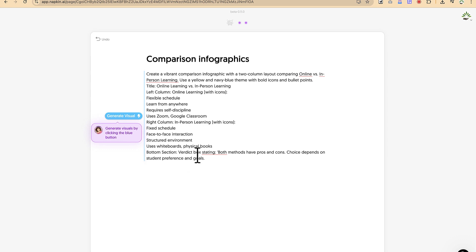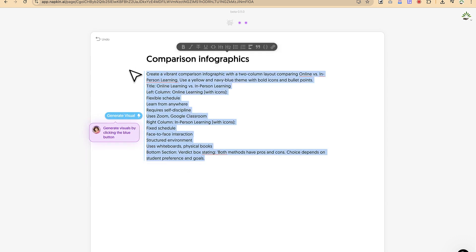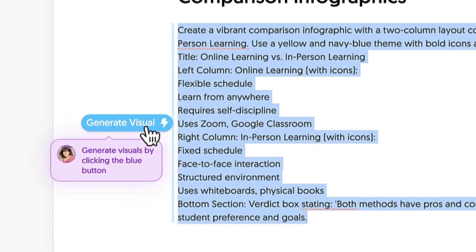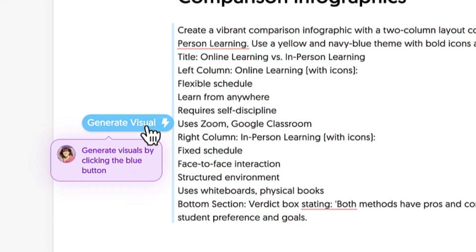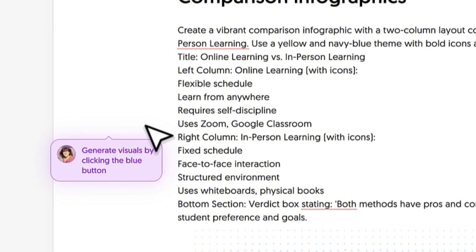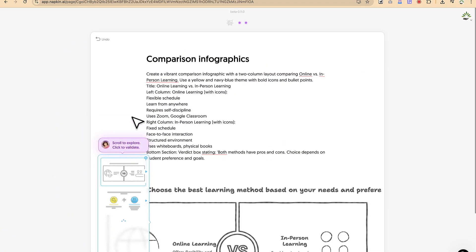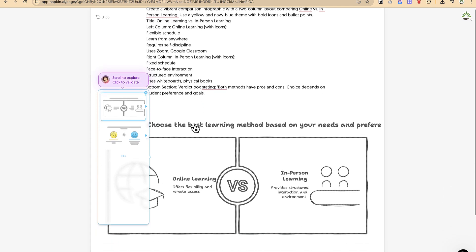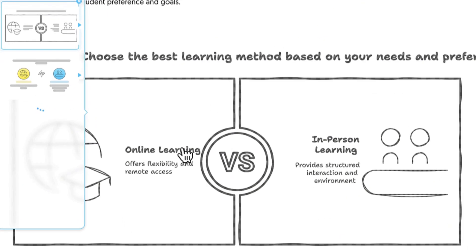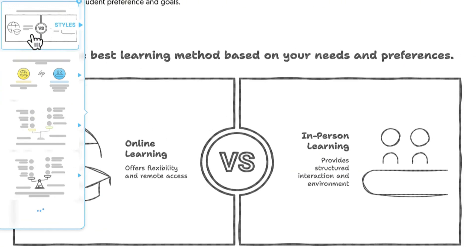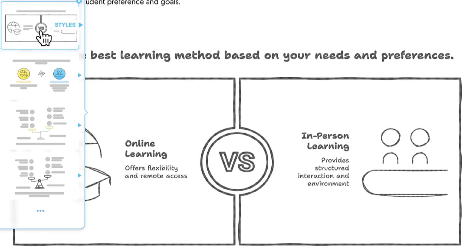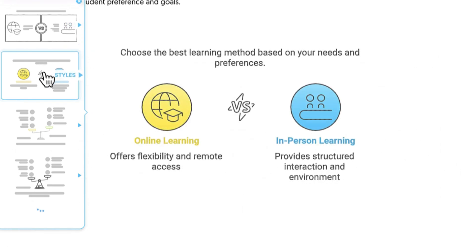To generate, select everything in the content area and you'll see the 'Generate Visual' button appear. Click on it and Napkin will process the whole idea and generate the visual for you. You can see it has given us a visual — online learning versus in-person learning, a direct comparison — and you'll also see the different types of visuals it has created listed on the left-hand side.